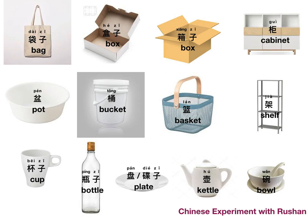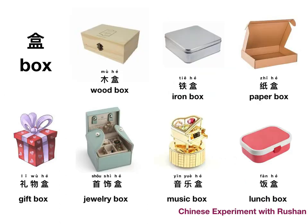Today we are not going to learn just the general terms but the different variations within the container category by material and function. So for example 盒 — the box — by material we have a wooden box, an iron box, and a paper box. And by function we have a gift box, a jewelry box, a music box, and a lunch box. We will learn all of this today.